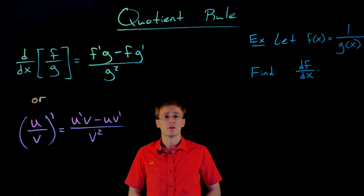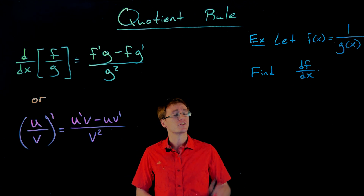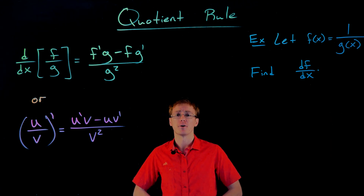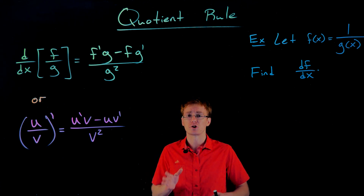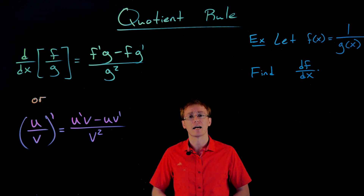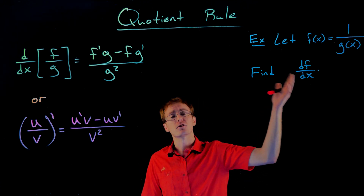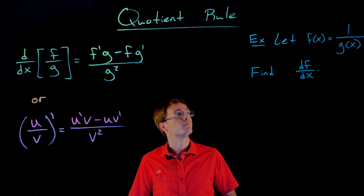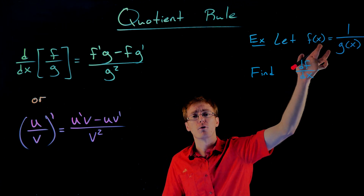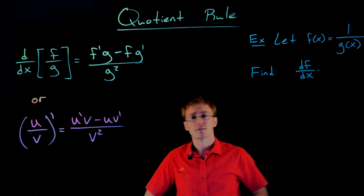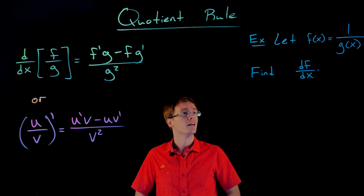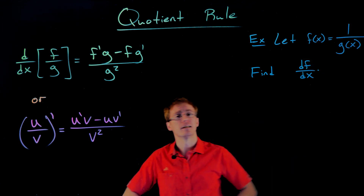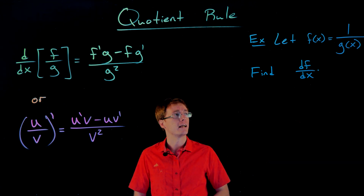I have another example using the quotient rule that I'd like us to look at. This example is going to be a little different because we don't have a particular function involved. This is actually going to give us a nice shortcut we can use for a certain type of function — functions we run into quite often. Here we're looking at a function of the form f(x) equal to 1 over g(x), and we want to find the derivative of that. How do you differentiate the reciprocal of a function? We can figure that out using our quotient rule.